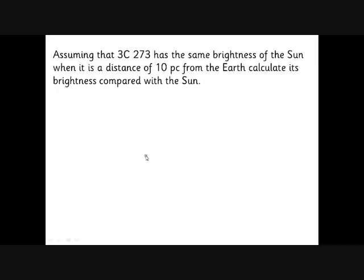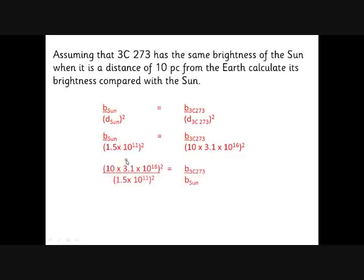So comparing brightnesses, remember this is an inverse square law, so the brightness goes down as the square of the distance. So the brightness of the Sun divided by the distance to the Sun squared must be the same as the brightness of our quasar divided by the distance of that squared. Well here's our distance to the Sun in meters, here's the distance to the quasar turned into meters with our conversion factor there, 3.1 times 10 to the 16 meters in a parsec. If we just cross multiply there to rearrange that, we get this expression here for the relative brightness of the quasar compared with the Sun. If you put the numbers in the calculation, you end up with 4 times 10 to the 12. So what that tells us is that this quasar is 4 million million times brighter than the Sun.